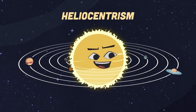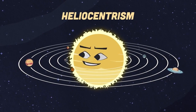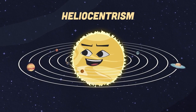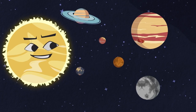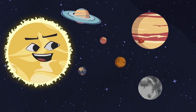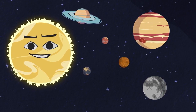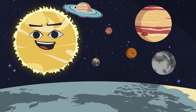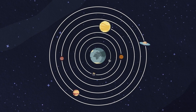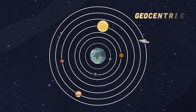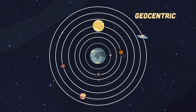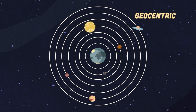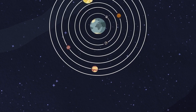What is heliocentrism? This is something you'll learn here. Who is Nicholas Copernicus? I'll also share. For over 1,500 years, ancient man thought the Earth was the center of the solar system — this theory was called the geocentric model, which means the Earth was the center of the universe.